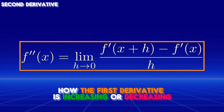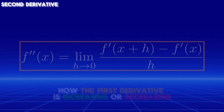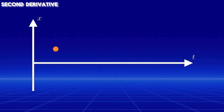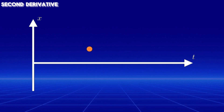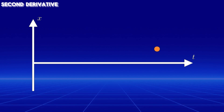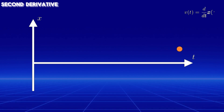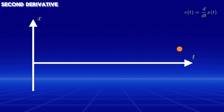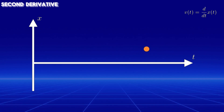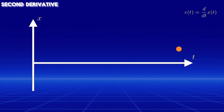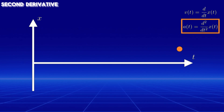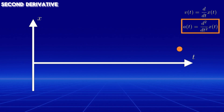Let's look at a practical example. Imagine a ball moving from one point to another. The rate at which the ball's position changes with respect to time is its velocity, which is the first derivative of the position function. Now, if the velocity changes — whether it's increasing or decreasing, rapidly or slowly — this rate of change of velocity is the acceleration, which is the second derivative of the position function.